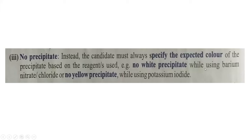For example, when using barium nitrate or barium chloride you expect a white precipitate; when using sodium sulfate you also expect a white precipitate; but when using potassium iodide, you expect a yellow precipitate. If that yellow precipitate doesn't form, write 'no yellow precipitate.' Don't just write 'no precipitate' — you will get zero.